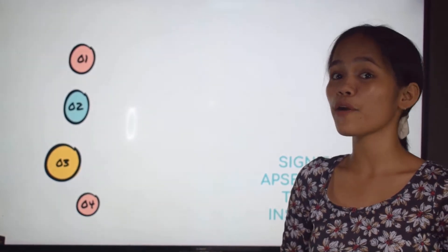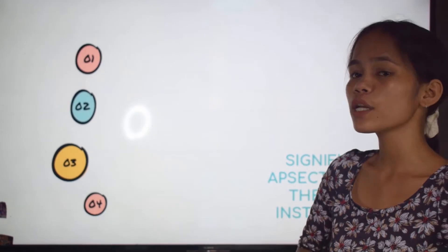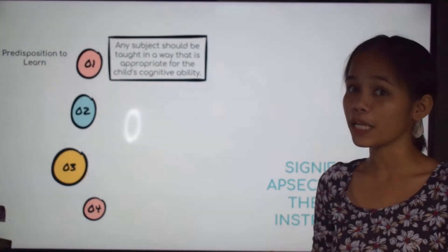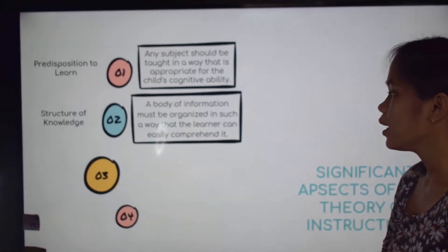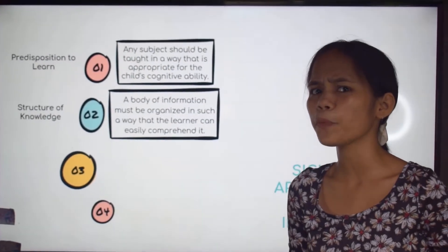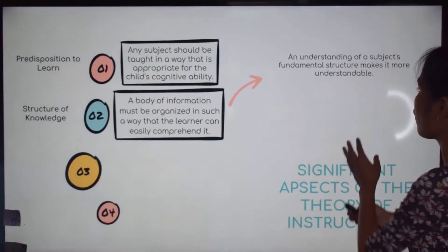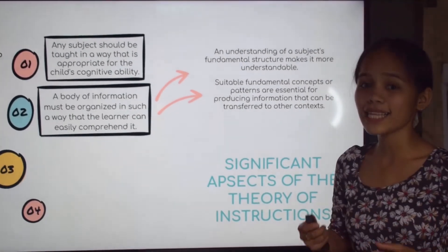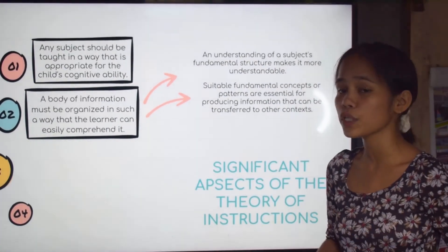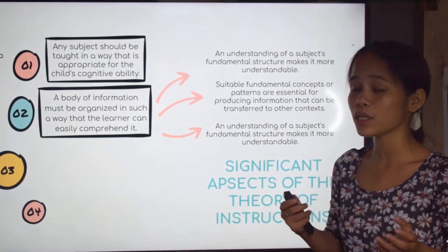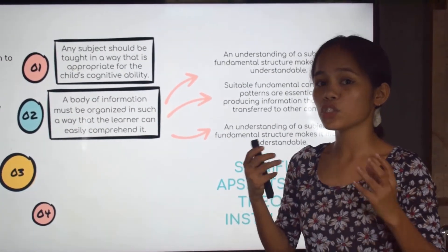What are the significant aspects of the theory of instruction? Bruner posits that there are four. First, we have the predisposition to learn — any subject should be taught in a way that is appropriate for a child's cognitive ability. Second is the structure of knowledge — a body of information must be organized so that the learner can easily comprehend it, because understanding a subject's fundamental structure makes it more understandable, and suitable fundamental concepts are essential for producing knowledge that can be transferred to another context.